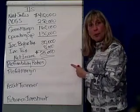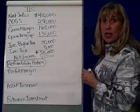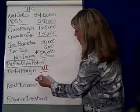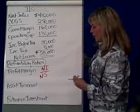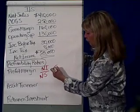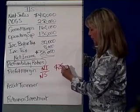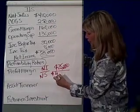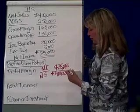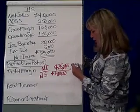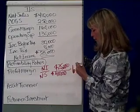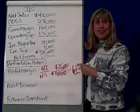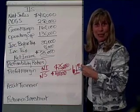The first profitability ratio is profit margin. Profit margin is net income divided by net sales. In this case, net income is $25,000 divided by net sales of $410,000, which means I have a profit margin of about 6.1%. Putting it a different way, 6 cents of every sales dollar is profit in your pocket.